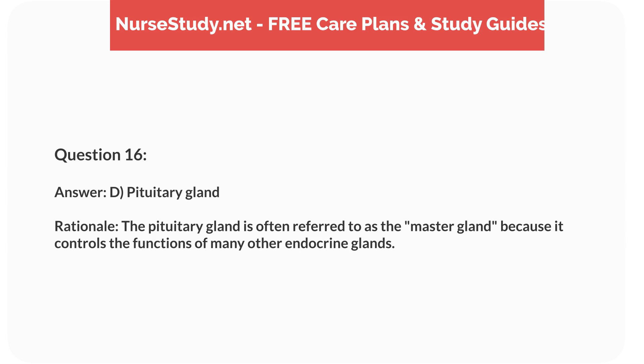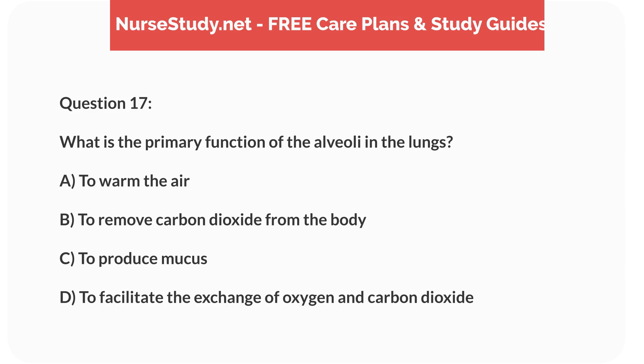Answer: D, pituitary gland. Rationale: The pituitary gland is often referred to as the master gland because it controls the functions of many other endocrine glands. Question 17: What is the primary function of the alveoli in the lungs? A) to warm the air, B) to remove carbon dioxide from the body, C) to produce mucus, D) to facilitate the exchange of oxygen and carbon dioxide.